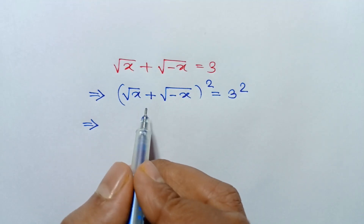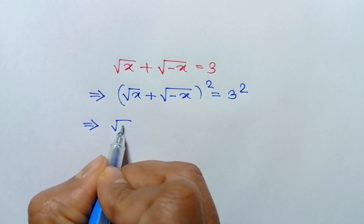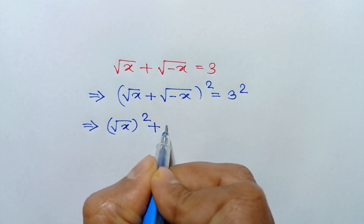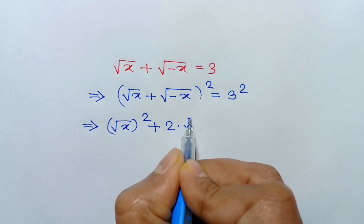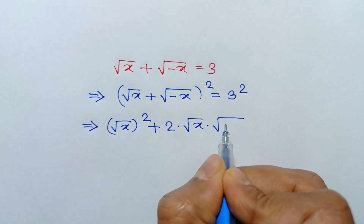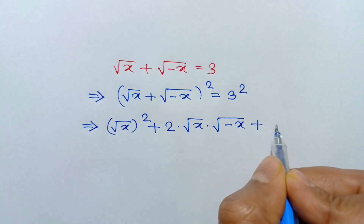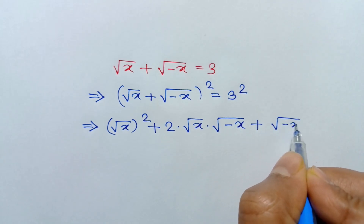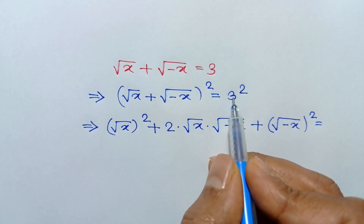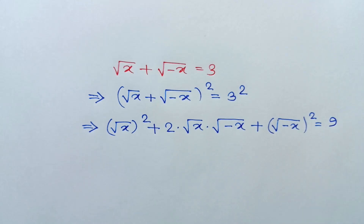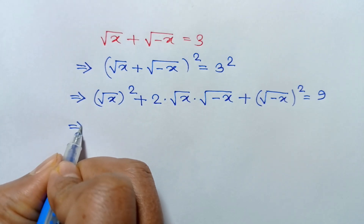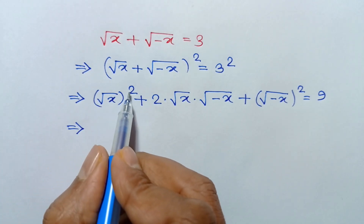We can write the left side as: square root of x whole squared, plus two times square root of x times square root of negative x, plus square root of negative x whole squared, is equal to the right side: 3 squared equals 9.